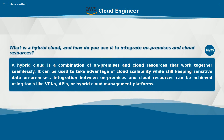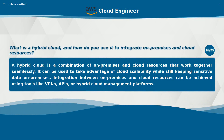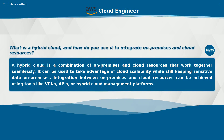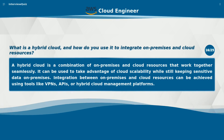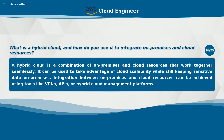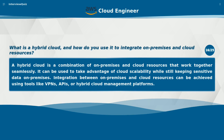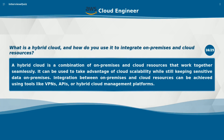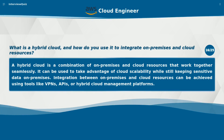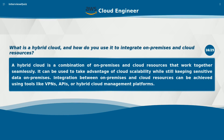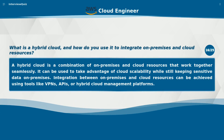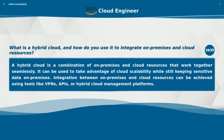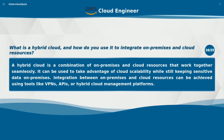What is a hybrid cloud and how do you use it to integrate on-premises and cloud resources? A hybrid cloud is a combination of on-premises and cloud resources that work together seamlessly. It can be used to take advantage of cloud scalability while still keeping sensitive data on-premises. Integration between on-premises and cloud resources can be achieved using tools like VPNs, APIs, or hybrid cloud management platforms.